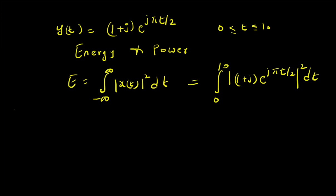Now let us verify with theoretical values. Since the signal is (1+j)·e^(jπt/2), the absolute value of the exponential part is one, so we are left with the constant |1+j|. Therefore the energy is |1+j|² times the integral from zero to ten dt. |1+j|² equals 1+1 = 2, and the integral equals ten, giving energy equal to twenty.